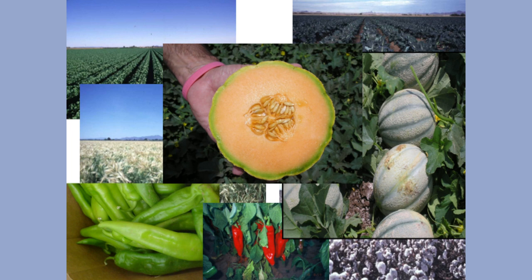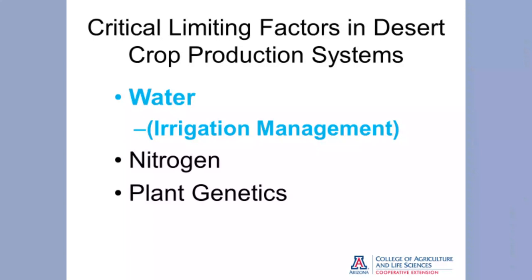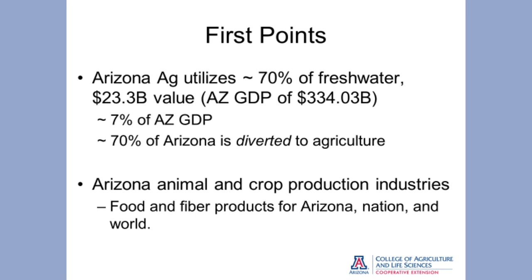Water is key to us and foundational to agriculture. It gives us the capacity to produce an abundance of crops — we can grow about anything in this state if the market and capacity are there. Globally, the first limiting factor in terrestrial ecosystems and agriculture is sunlight, but growing in the desert, sunlight is not limiting. Our first limiting factor is water, followed by bioavailable nitrogen and good genetics. Arizona agriculture utilizes about 70 percent of the state's diverted fresh water, generating over a $23 billion industry — about seven percent of the state's GDP.